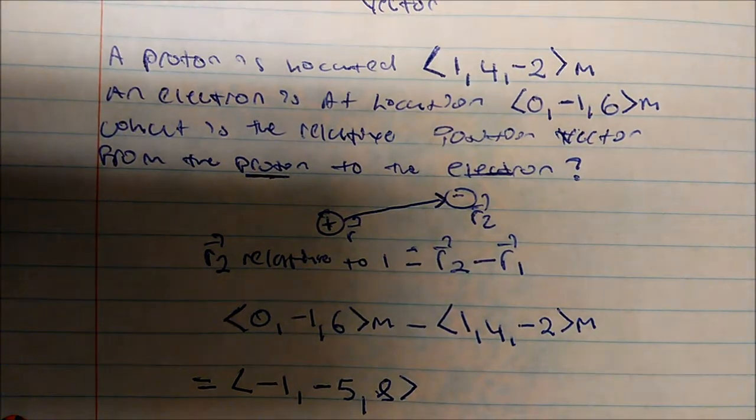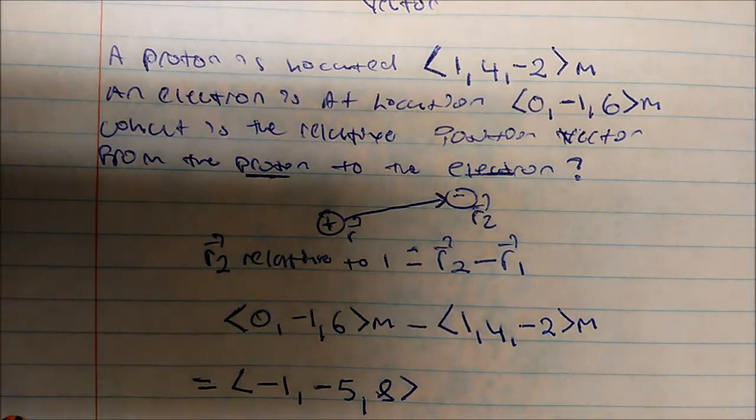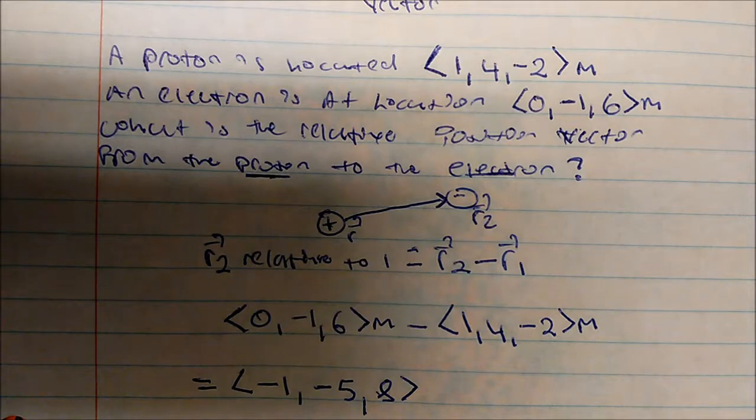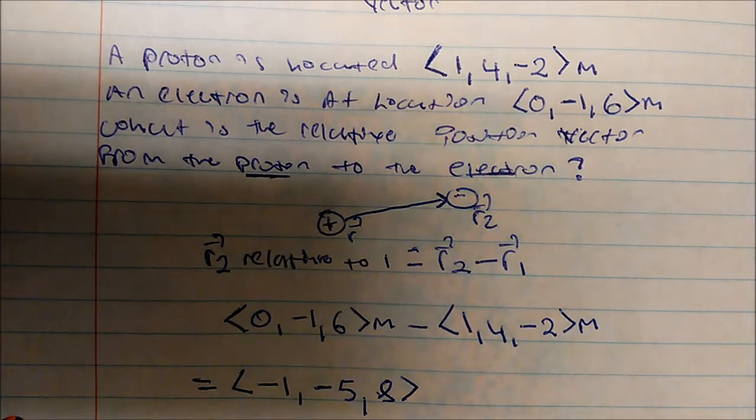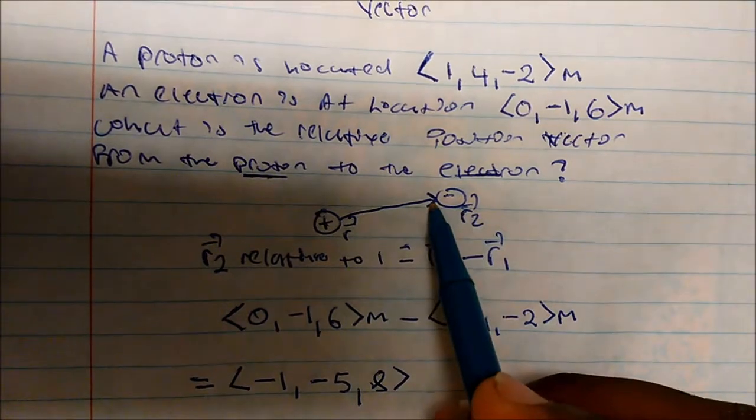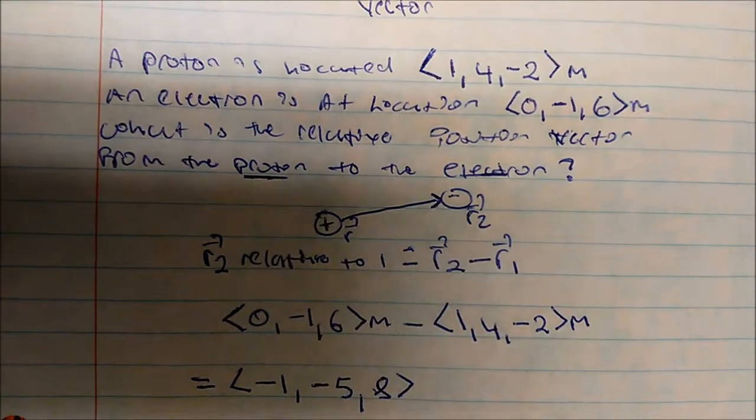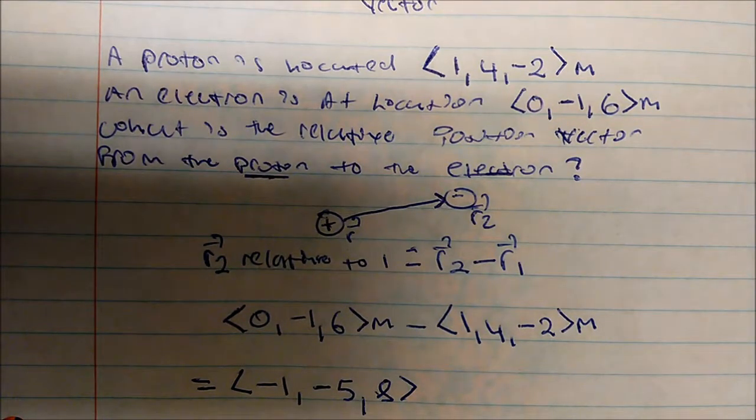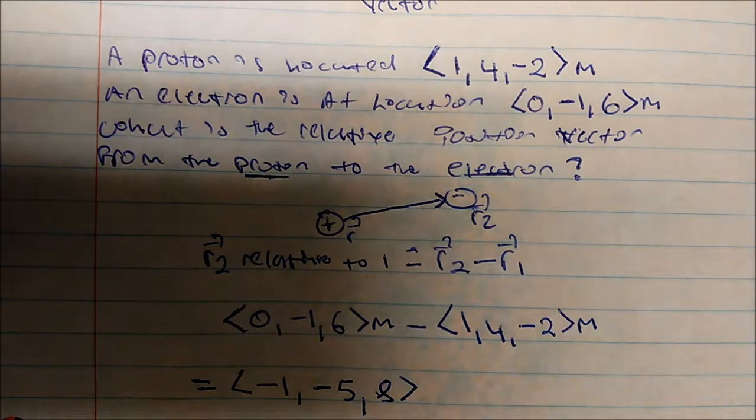And that's how we find a relative position vector. So it is relative. The relative position vector is defined by R2 relative to R1. So wherever your tip is going to, that will be your R2. Wherever your tail is at, that will be your R1. That is the takeaway from this video.